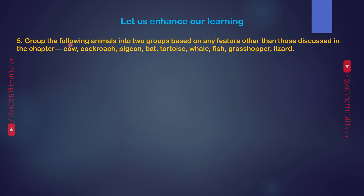Question 5. Group the following animals into two groups based on any feature other than those discussed in the chapter: Cow, Cockroach, Pigeon, Bat, Tortoise, Whale, Fish, Grasshopper, Lizard.